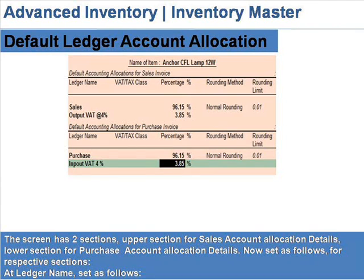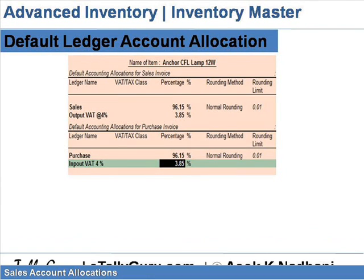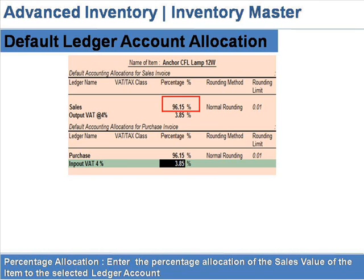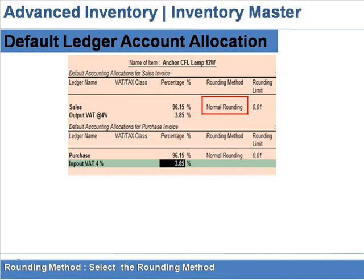For sales account allocations, at 'Ledger Name,' select the sales ledger from the list of sales or direct income ledger accounts. At 'Percentage Allocation,' enter the percentage allocation of the sales value of the item to the selected ledger account. At 'Rounding Method,' select the rounding method.